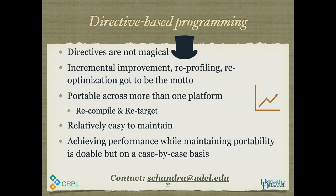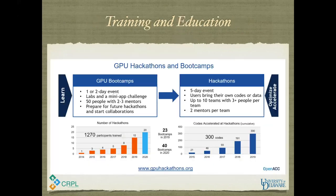To wrap up: directives are not magical — incremental improvement is what gets you to where you want to go. The fun part of using OpenACC was being able to recompile and retarget. In the biophysics code, we have not changed a single line of source code and it runs on both multicore and GPU. The idea of using directives is to maintain portability. Contact me if you have questions, and check out the GPU hackathons and bootcamps website for more information.